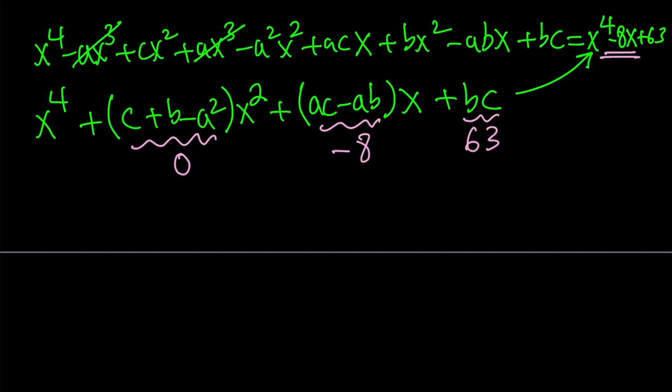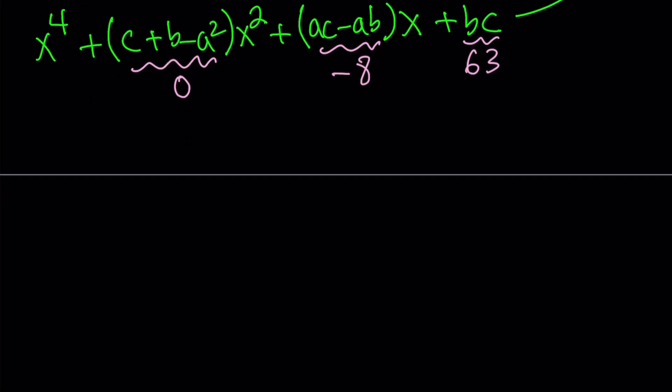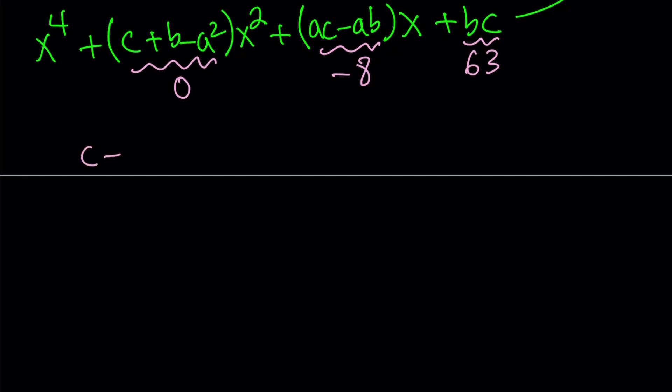So let's go ahead and set up a system of equations, and we're going to solve for it. We have three variables and three equations, so we should be good to go. So here's what I get from the coefficient of x squared. c plus b equals a squared. What about the other ones? I get ac minus ab is equal to negative 8. I can take out an a and write this as a times c minus b equals negative 8. My goal is to isolate c minus b, so let's go ahead and write it as negative 8 over a.